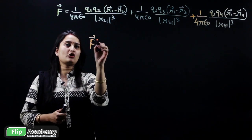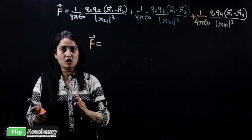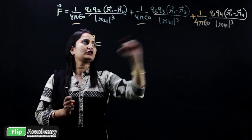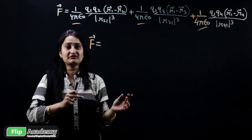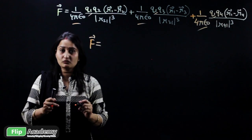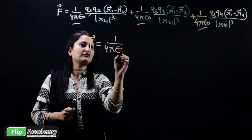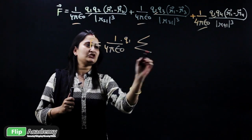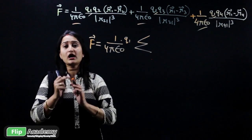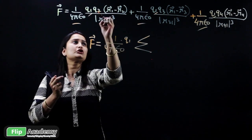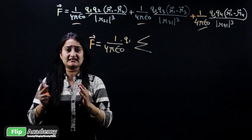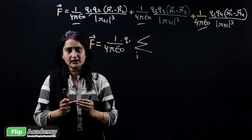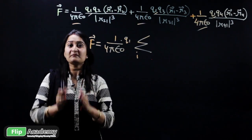To simplify, take the common terms out of the bracket. The term 1 over 4π epsilon-naught and Q1 appear in all three quantities, so we take them out. That is, 1 over 4π epsilon-naught times Q1 is factored out in front of the summation sign. We then assign a loop variable i to handle the remaining terms.